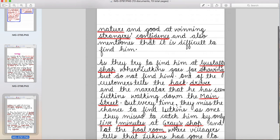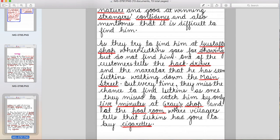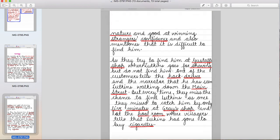But every time they miss the chance to find Lutkins as one they miss to catch him by only five minutes at Gray's shop and at the pool room where villagers tells that Lutkins had gone to buy cigarettes. Toh woh in jagahon pe jate hai par Lutkins hamesha yaha se escape kar jata hai. This is how they are not able to find Lutkins.